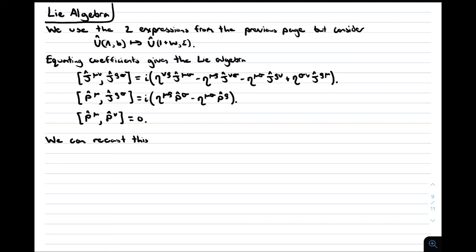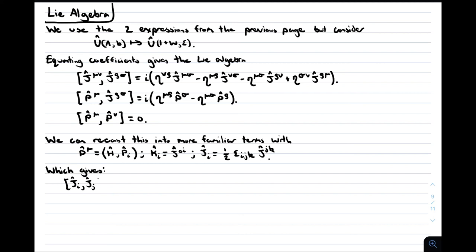But then we can recast the Lie algebra into operators that are more familiar to us. We define the four momentum operators as the Hamiltonian and the free components of momentum. We define the boost generators and rotation generators, which we interpret as the angular momentum operators, as we did on the previous slides. This then gives the Lie algebra in the form we will use it more often than not. Firstly, the Lie algebra of the proper orthochronus Lorentz group, which of course has the SU(2) Lie algebra, as well as two more identities.